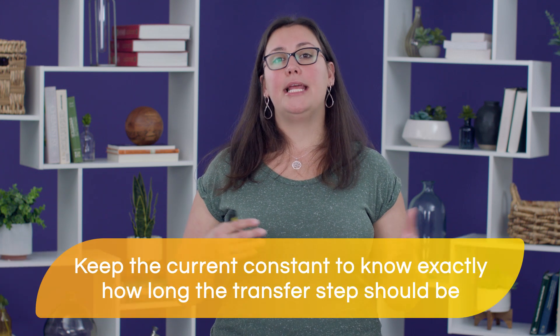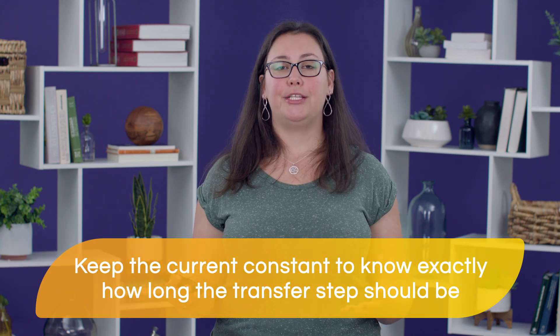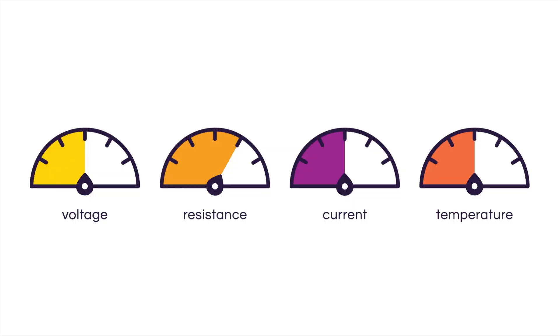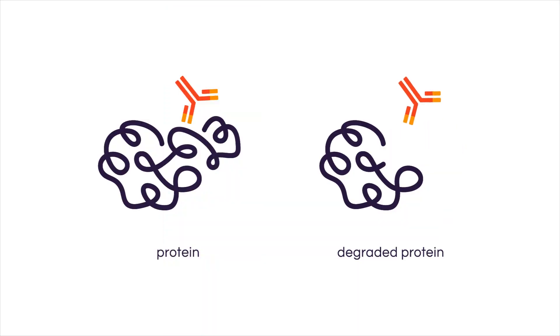Most researchers choose to have their transfer performed under constant current. The reason for that is that if the current is constant, they know exactly how long the transfer step should be — it's not going to change. That's particularly important because on the transfer step, we have no visual cue as to when the transfer is complete, as to when the proteins have migrated from the gel onto the membrane. They'll perform that transfer under constant current and also keep the temperature under control with the aid of ice packs, to make sure the temperature doesn't rise. If the temperature does rise, we're going to end up having protein degradation, and if we have protein degradation, the primary antibody is probably not going to be able to recognize the antigen on our protein of interest.